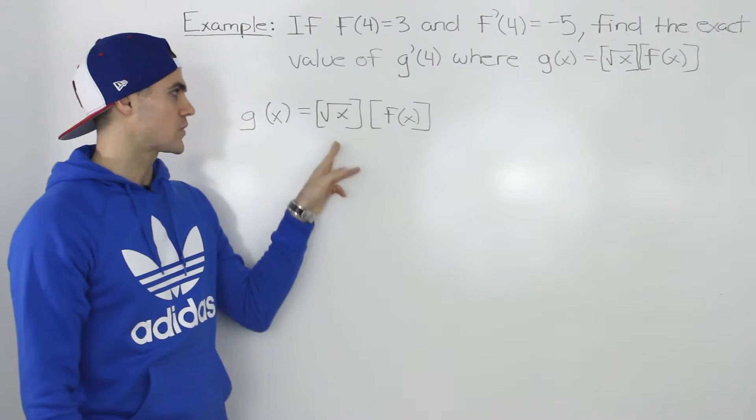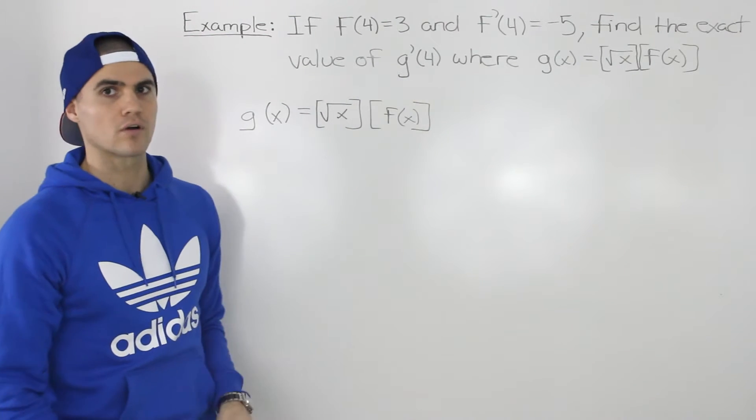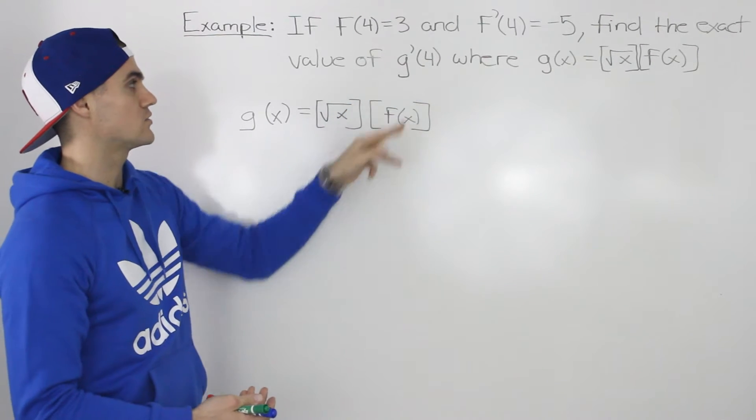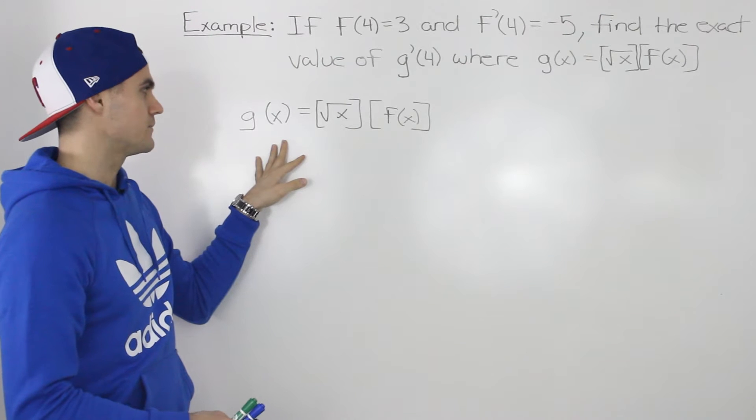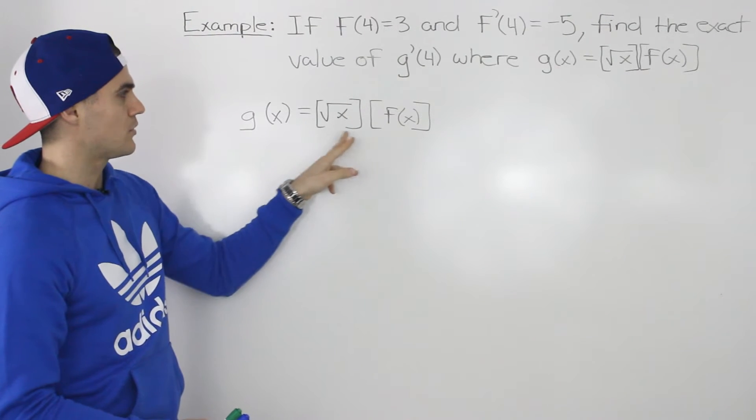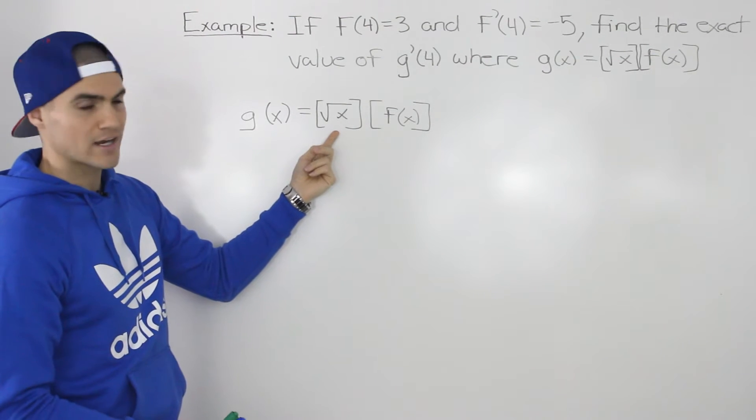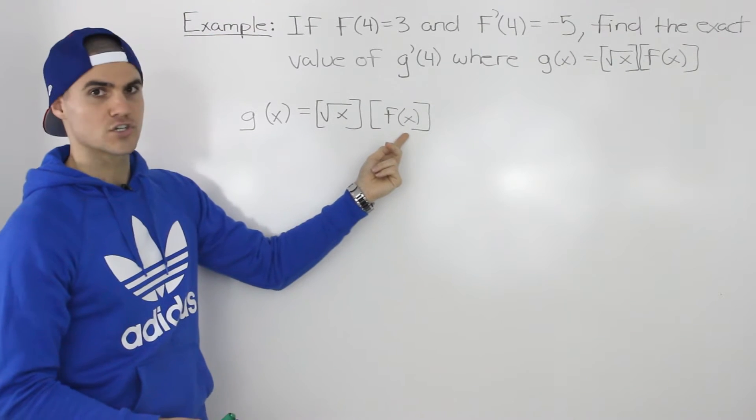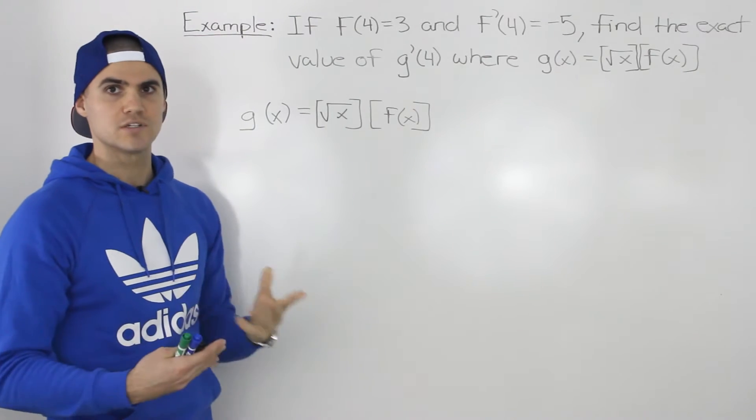We're given this function, √x times f(x), and we have to find g'(4), which is the value of the derivative of g at an x value of 4. So we know we're going to have to find the derivative of this function. What makes this function a little bit weird is that it's composed of two functions multiplied by each other, but one of the functions is an actual expression, the square root of x, but then the other function is just kept in a general format, f(x). So what do we do there?